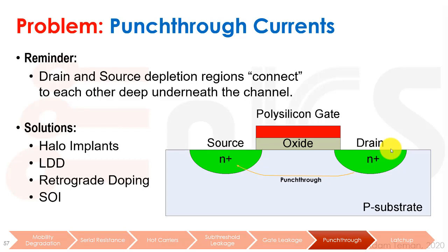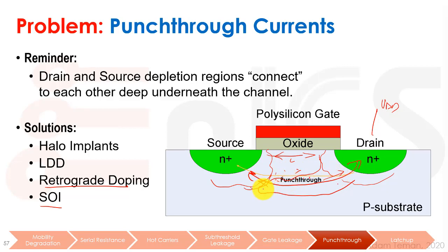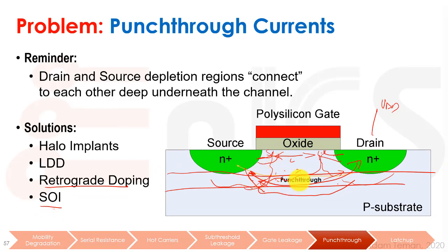The next problem is punch-through currents. The drain and source depletion regions connect to each other deep underneath the channel. When we apply VDD, the drain depletion region gets really large, and if L is small enough, it connects with the source depletion region — giving us uncontrolled current deep underneath the channel, bypassing the gate, meaning we no longer have a functioning transistor. Solutions include halo implants, LDD, retrograde doping, and SOI. Retrograde doping provides high doping deep under the channel, reducing these depletion layers. LDDs have smaller depletion regions. SOI uses a buried oxide so deep depletion regions simply can't occur.